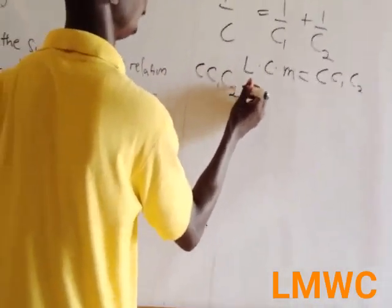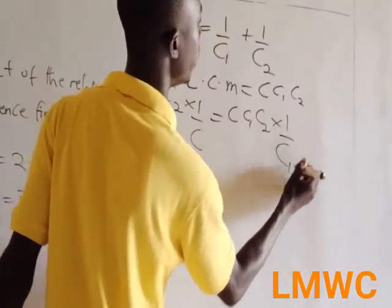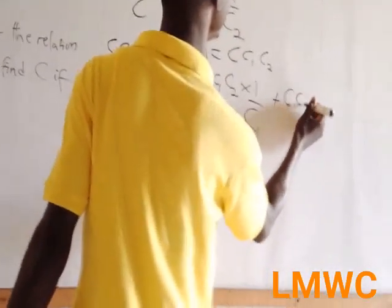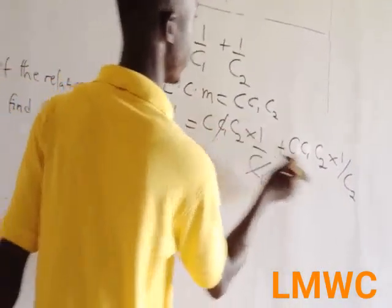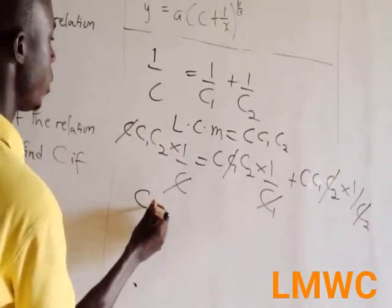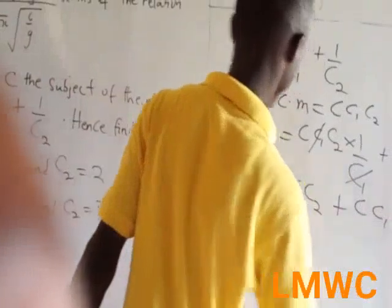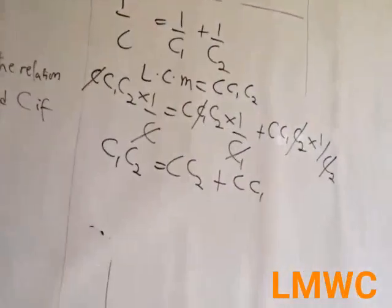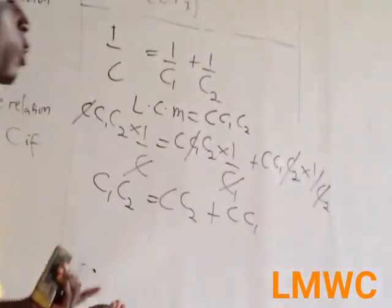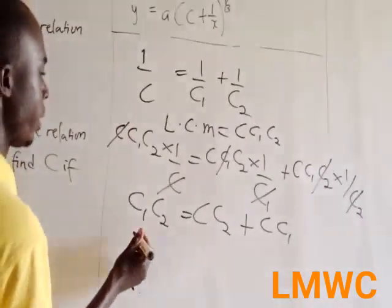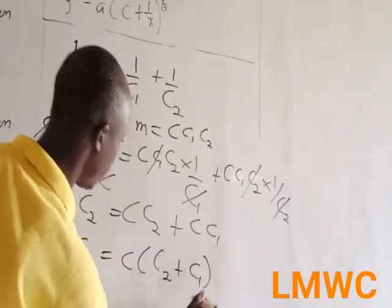It becomes c·c1·c2 times 1/c = c·c1·c2 times (1/c1 + 1/c2). After cancellation, it becomes c1·c2 = c·c2 + c·c1. You have been asked to make c the subject, so you group the components containing c. You factorize: c1·c2 = c(c2 + c1). So you divide through by (c2 + c1), giving c = c1·c2 over (c1 + c2).